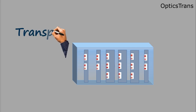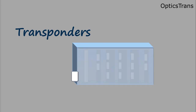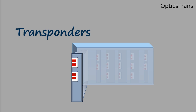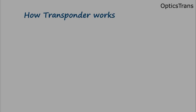Transponders are an important component in DWDM networks. A transponder, also known as a Wavelength Converting Transponder, gets its name from a mix of transmitter and responder, which gives us an idea of its purpose. It is an element that sends and receives the optical signal from a fiber. In this video, we are going to discuss how a transponder works.